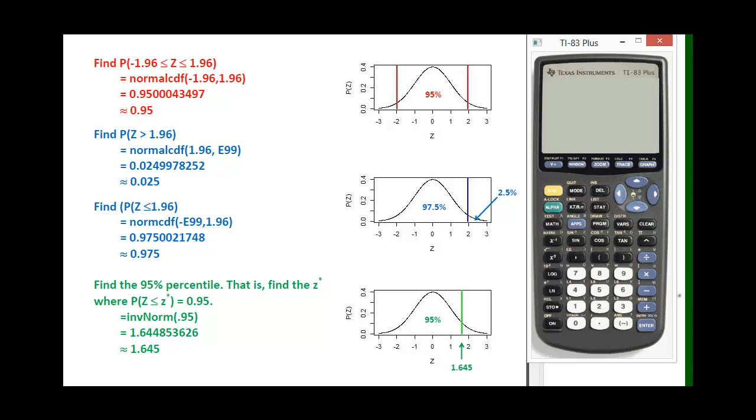So the first, let's say you want to find the probability in between two values. And so I have a picture represented right here. And I'm interested in finding the probability in between minus 1.96 and 1.96. And so writing that out as an expression, I want the probability between minus 1.96, so less than or equal to Z, so our standard normal, less than or equal to 1.96.